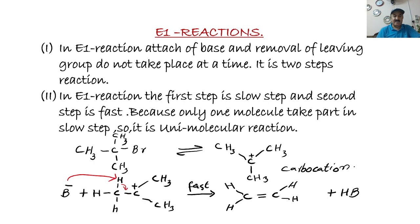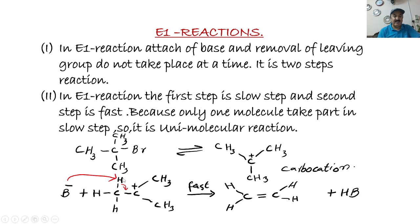Because only one molecule takes part in the slow step, it is called a unimolecular reaction. Here, this tertiary alkyl halide ionizes first to form a carbocation — this is the slow step. You have to write 'slow' here.